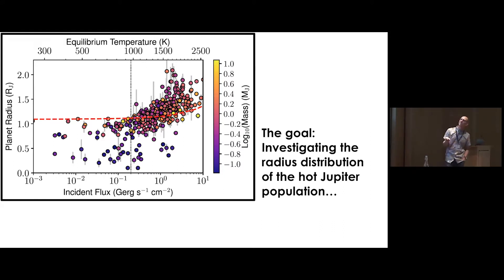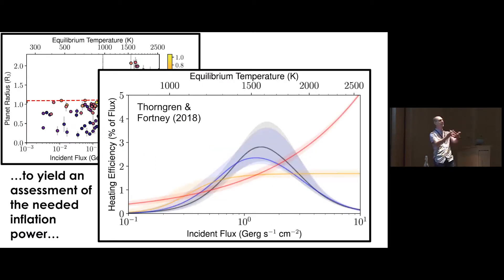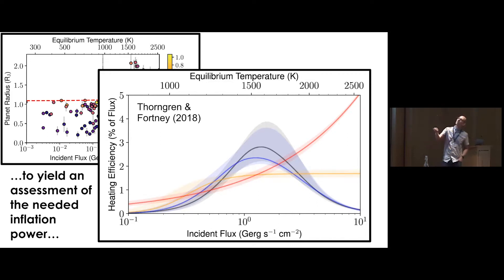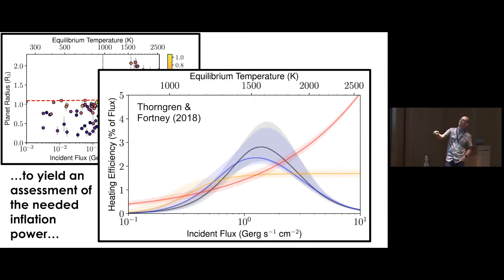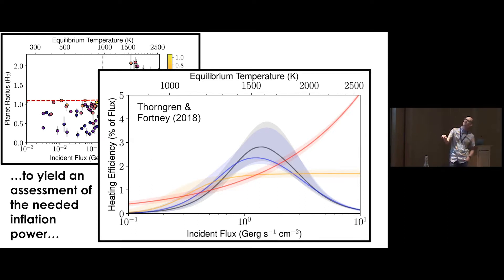The goal is to use the radius distribution of over 300 hot Jupiter objects to infer something about the population. This is work January did last year: assessing the anomalous heating power needed to explain the observed radii. If some fraction of stellar energy gets into the planet's deep interior, you need only a few percent. The required heating efficiency starts small for cooler hot Jupiters, peaks around planets at ~1500 K, then decreases again — forming a quasi-Gaussian shape. We're now recasting that in terms of the intrinsic flux coming out of the interior.